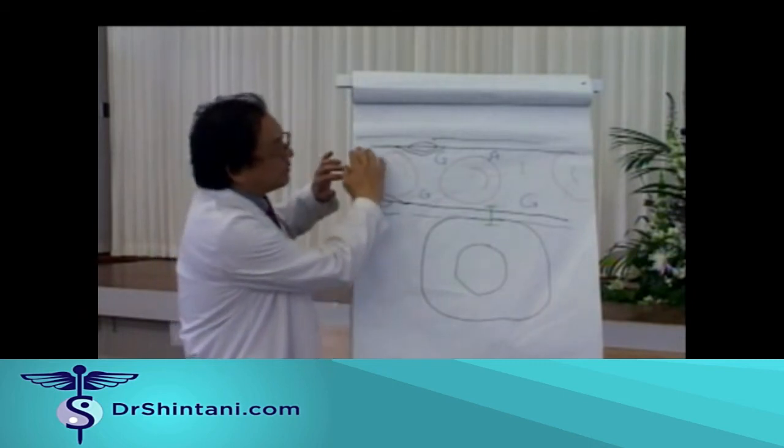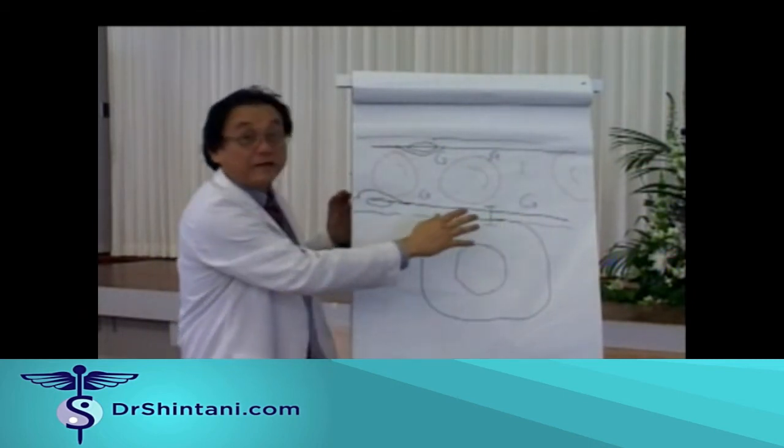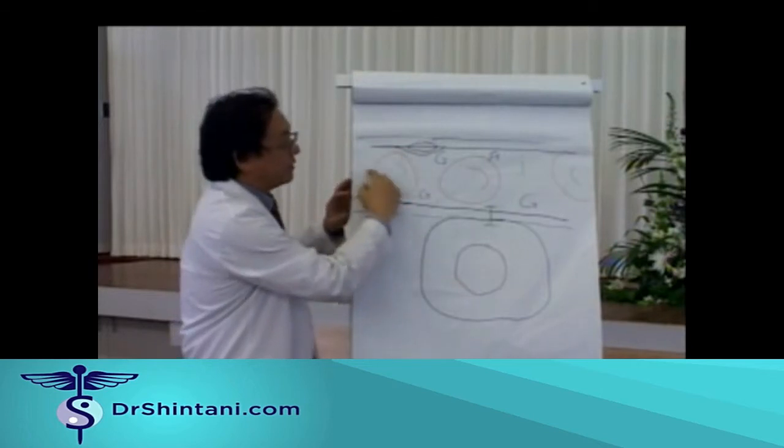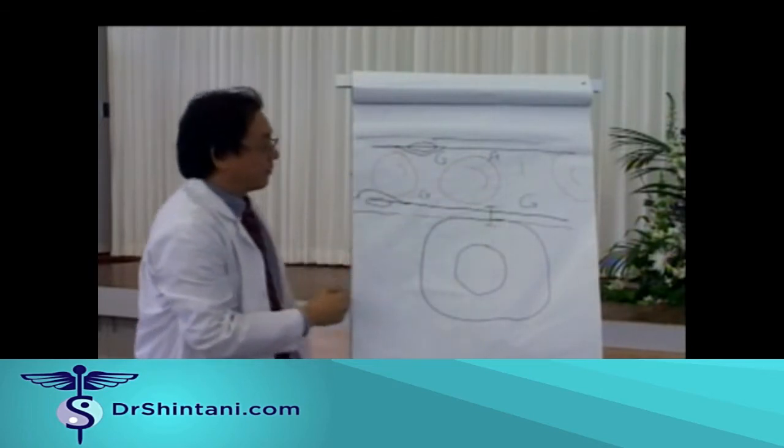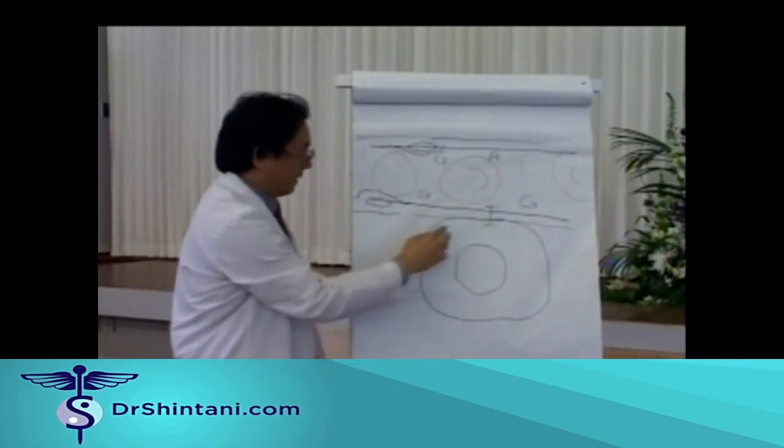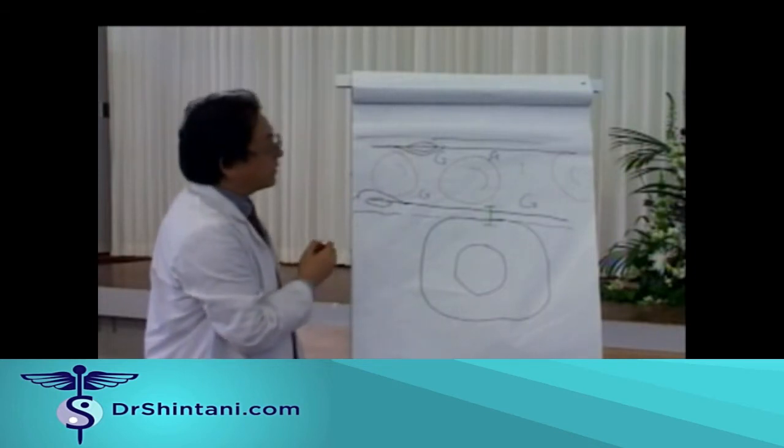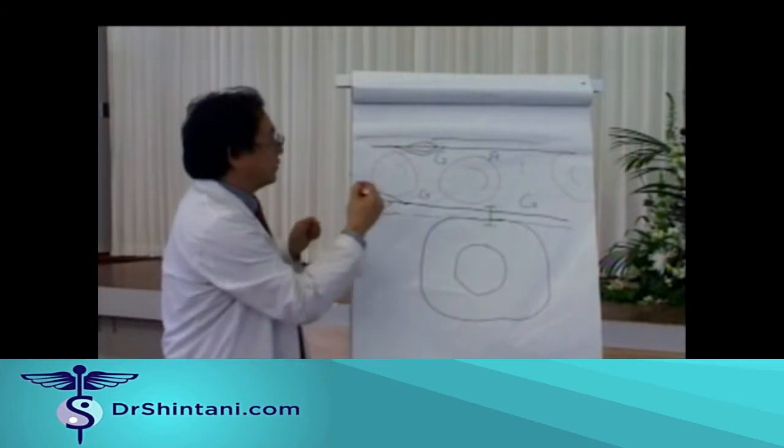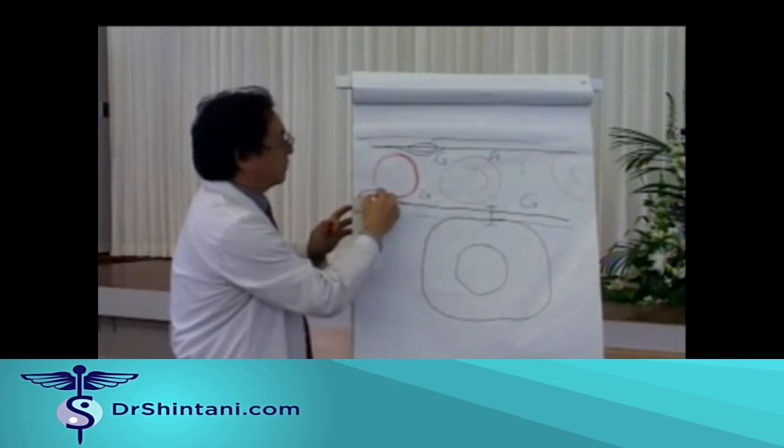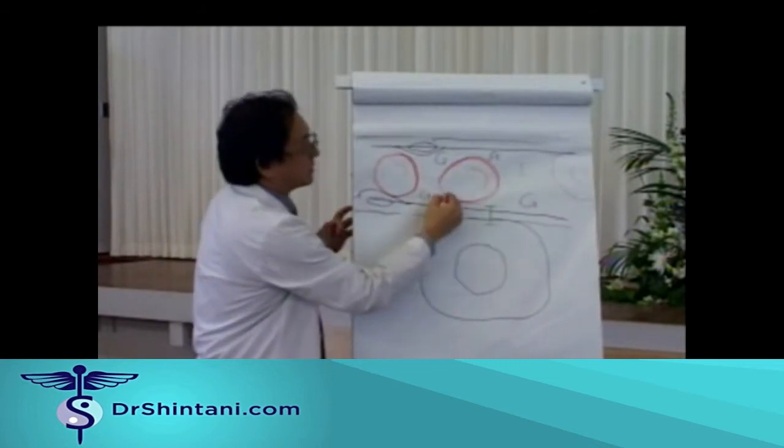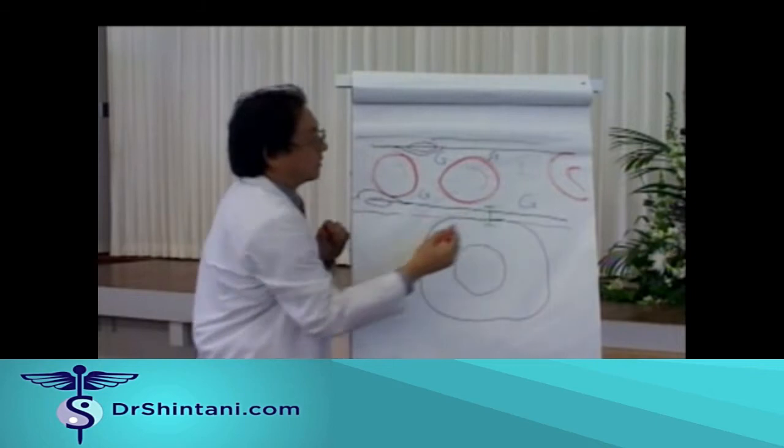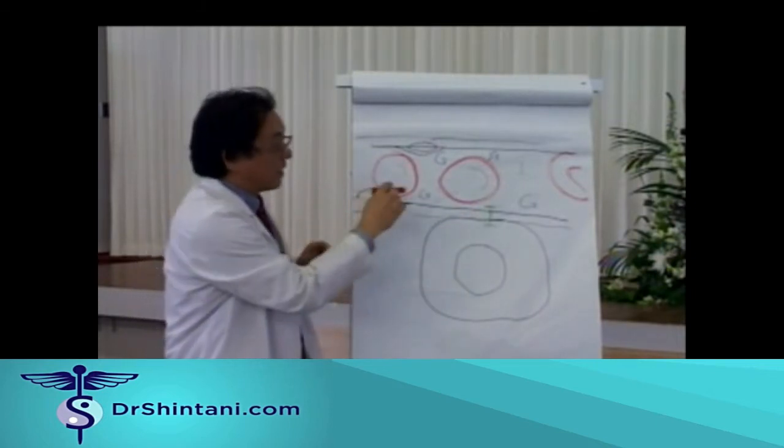Now, if you can imagine this as a capillary, and these are red blood cells, the blood is flowing through the capillary, and what the blood cells are doing is delivering oxygen to the cells.